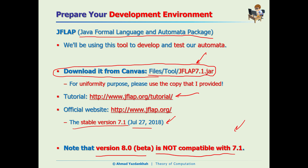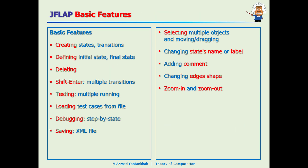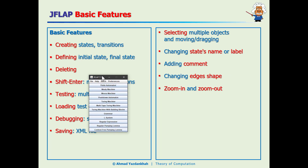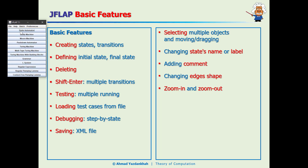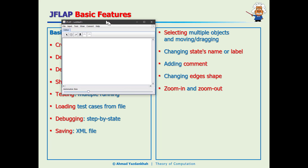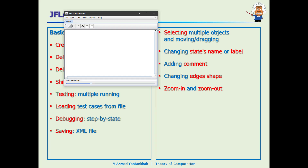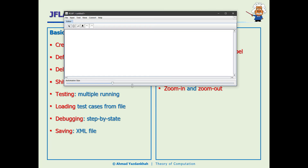Here is JFLAP. As you can see, there are many machines and tools available. We will be using some of them during the semester. DFAs, or Deterministic Finite Automata, is one option. When you click on Finite Automata, it opens a new canvas where you can put your design.